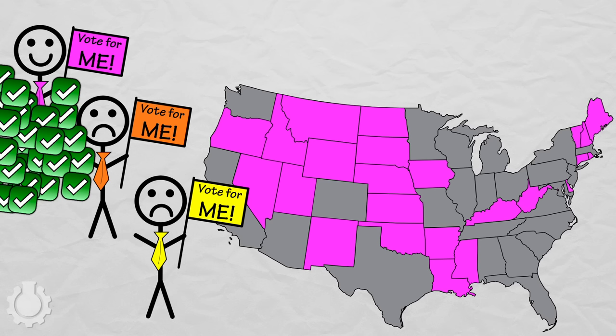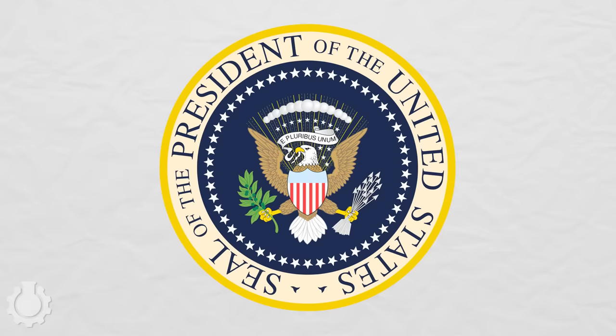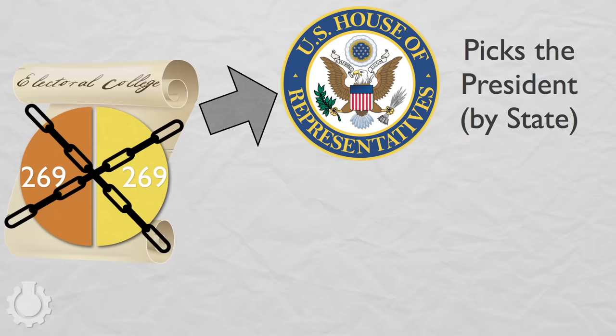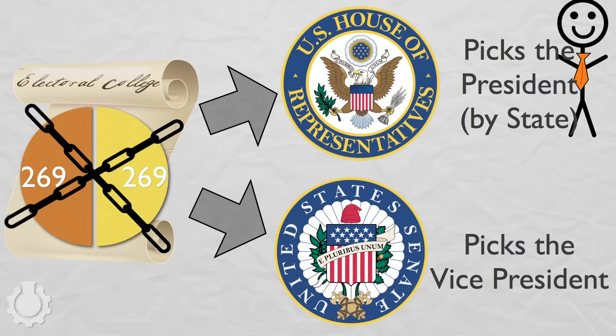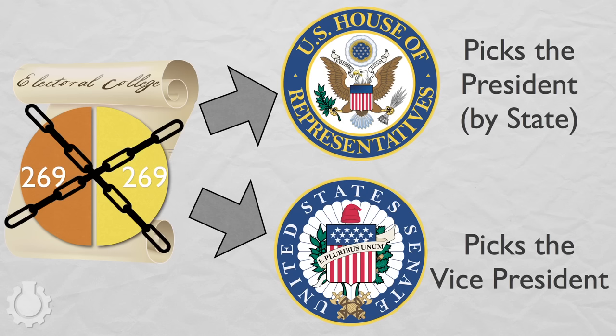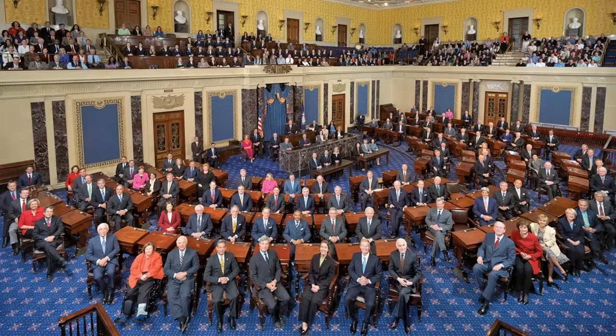Anyway, all this talk of presidents has left the vice president unmentioned. A reasonable person might assume that he just comes along with the president, but no. When there's a tie, the Senate independently picks the vice president. So the United States could end up with a president from one party and a vice president from the other, which might make for some very uncomfortable meetings.